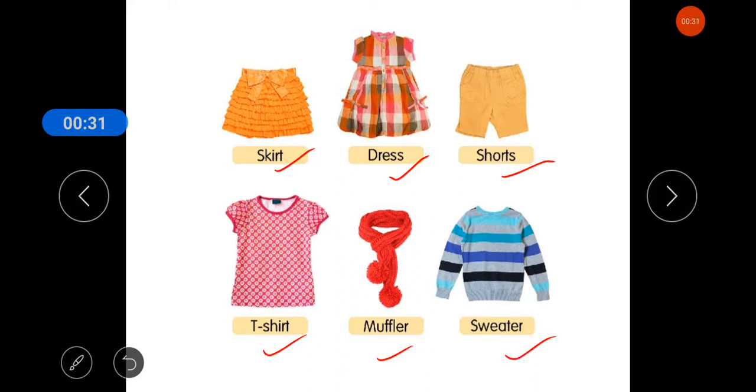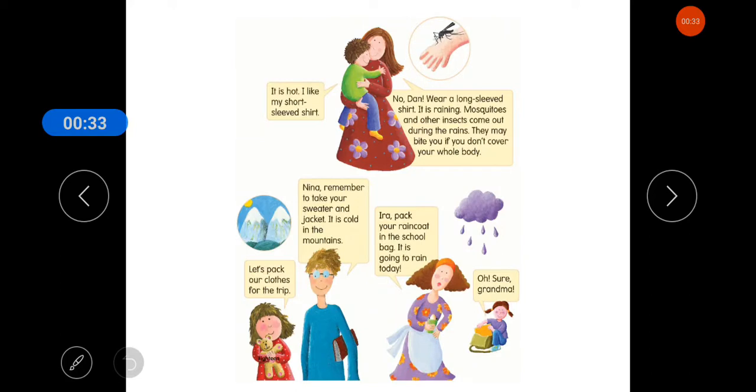Now students, let's read a paragraph about the clothes, that why clothes are important to us. So let's start reading. It is hot. I like my shorts, short sleeve shirt. Also the boy is saying that he is very hot and I like my shorts in the hot season. And I have a half sleeve shirt.